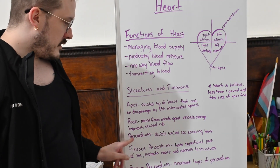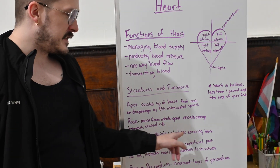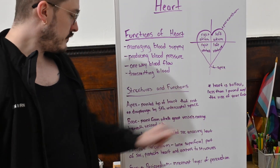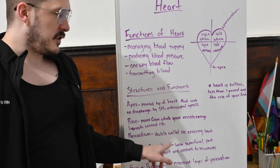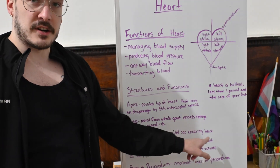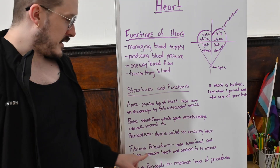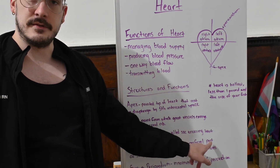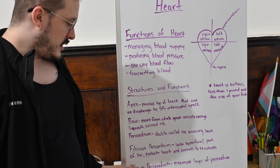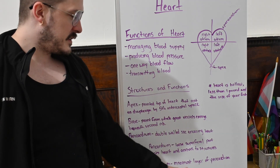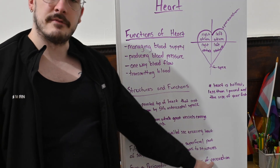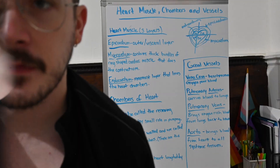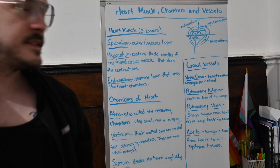The fibrous pericardium is the loose superficial part of the sac that protects the heart and anchors the heart to surrounding structures. The serous pericardium is the innermost layer of the pericardium.